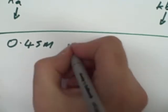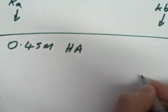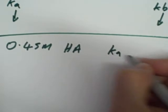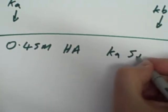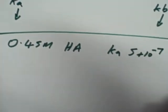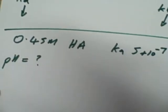Now I'm going to make up an example here. So I'm going to say 0.45 molar of a weak acid, which I'll just call HA, and it's got a Ka dissociation constant of 5 times 10 to the minus 7. Just made it up. How can I calculate pH?